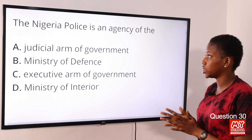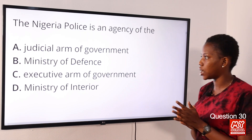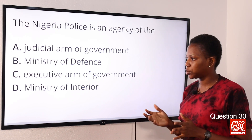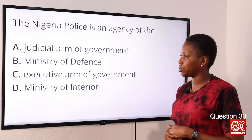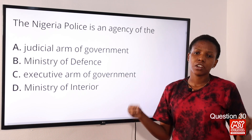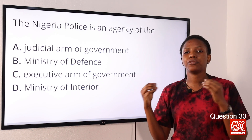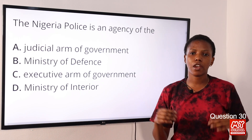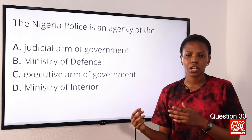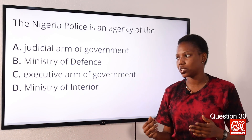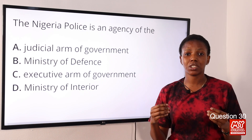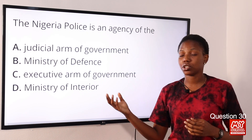Question 30: The Nigerian police is an agency of the — Option A: judicial arm of government. Option B: Ministry of Defense. Option C: executive arm of government. Option D: Ministry of Interior. The answer is Option C, executive arm of government. The Nigerian police is a law enforcement agency — they implement laws and policies laid down. The executive arm of government deals with implementation of laws.